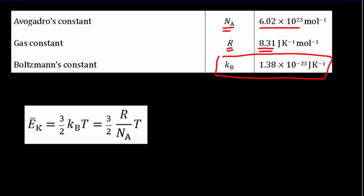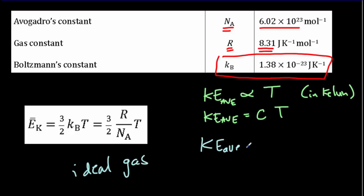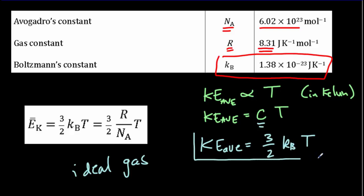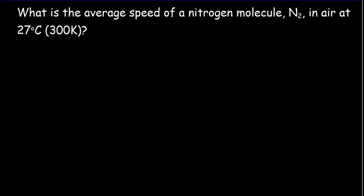There's also another interesting application of Boltzmann's constant. Temperature is a measure of the average kinetic energy of the molecules. For an ideal gas, it can be proven that the average kinetic energy equals 3/2 times the Boltzmann constant times temperature: KE_avg = (3/2) kB T. You don't have to remember this equation — it's given in your data booklet. With this equation we're able to solve problems like the next one.